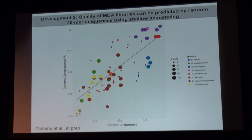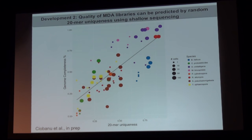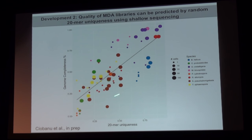Another lesson is that after the amplification steps, you can tell how good and how biased the amplification was by doing shallow sequencing. You take the amplification, make a MiSeq library, run a few million reads, and then look at the uniqueness of 20 base-pair words. If your library is really biased, you won't have high uniqueness; but high uniqueness means you're covering a lot of the genome. If the shallow sequencing showed high uniqueness, we're likely to get a complete genome when we do the full-on HiSeq sequencing.